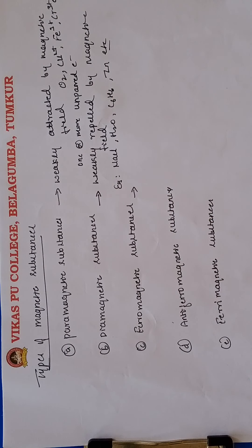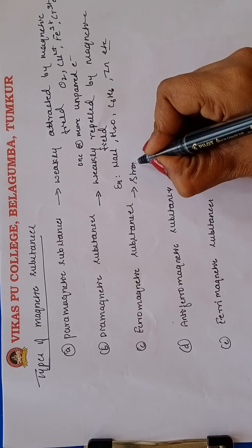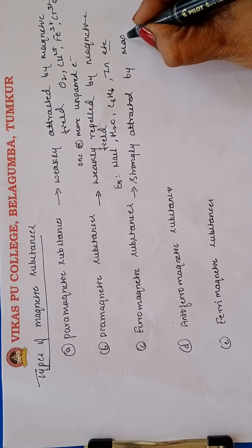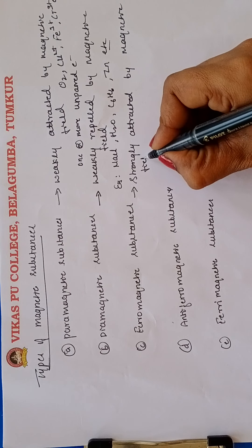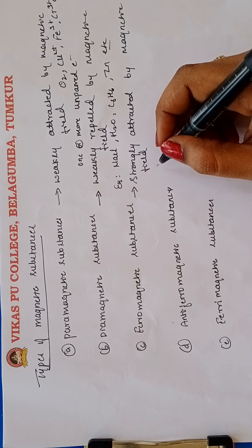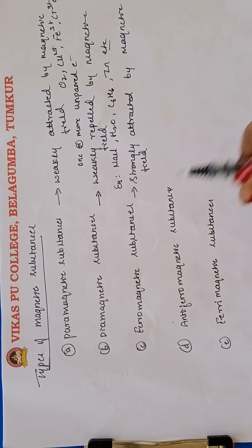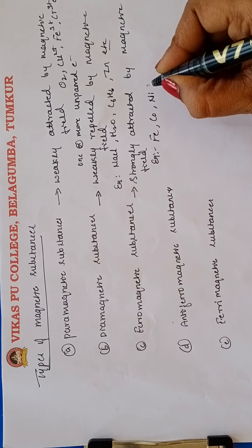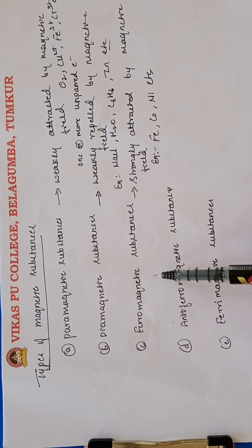Ferromagnetic substances are those which are strongly attracted by the magnetic field. These show permanent magnetism even in the absence of a magnetic field. Examples include iron, cobalt, and nickel.